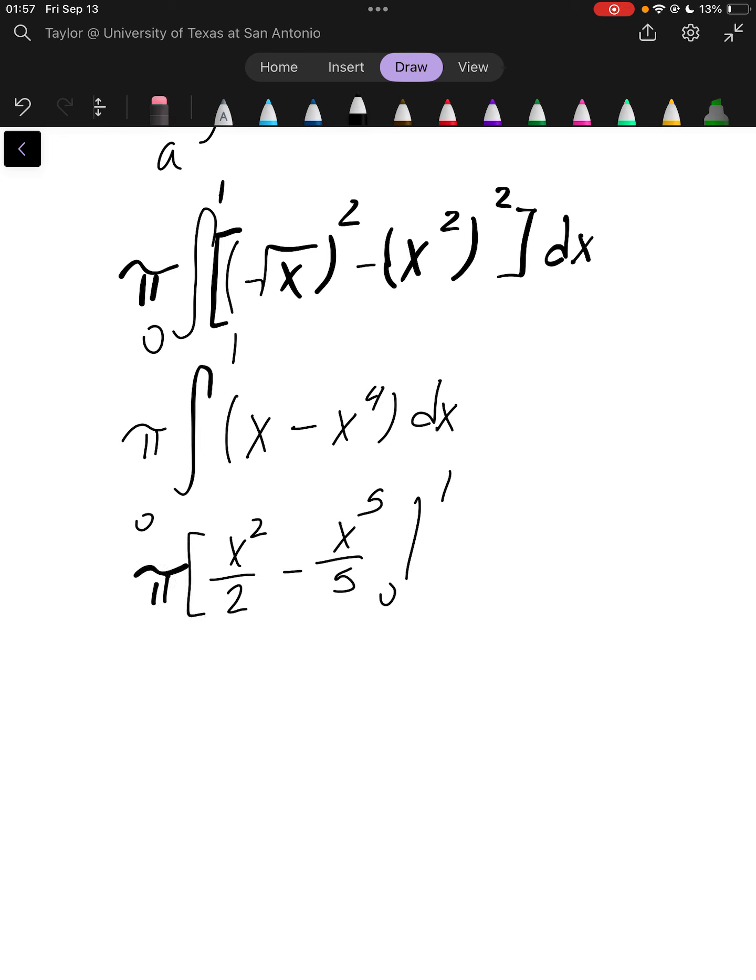Okay. Substituting that in, we get 1 over 2 minus 1 over 5 times pi.